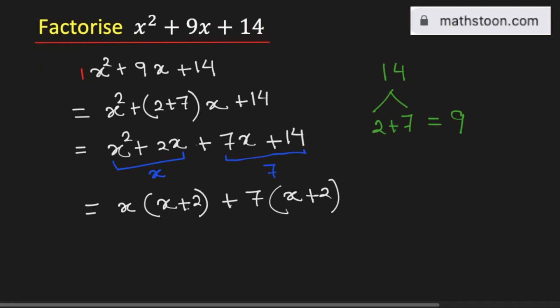You can see that x plus 2 is common in both these terms. So we can take it and then we can write it as x plus 2 times x plus 7.